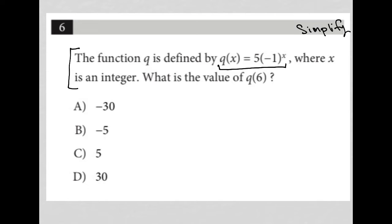So let's read this and see if I only need to simplify or if there's something more to it. The question says the function q is defined by, and I'm going to just rewrite this, q(x) is equal to 5 times negative one to the x power, where x is an integer. What is the value of q(6)?